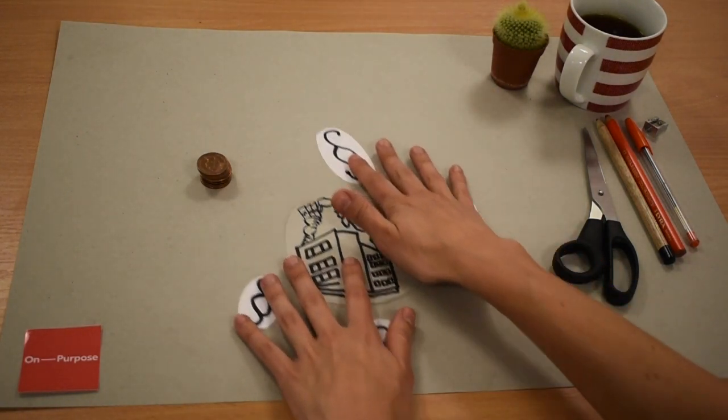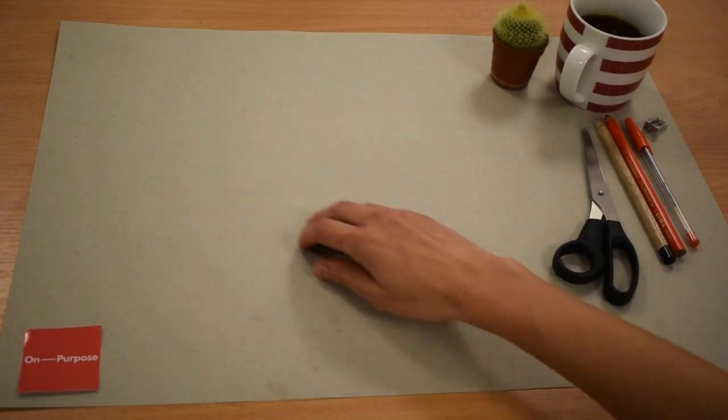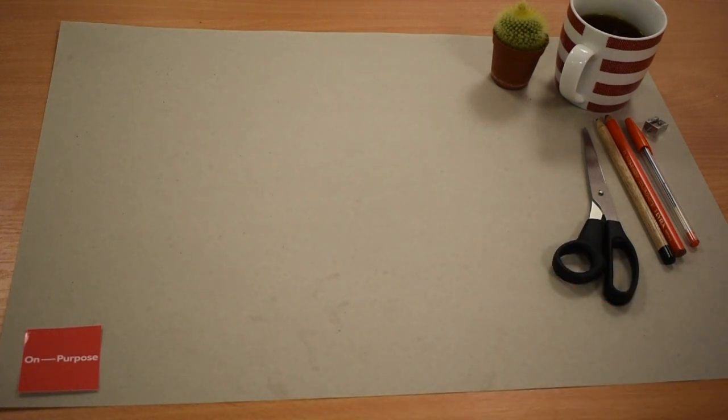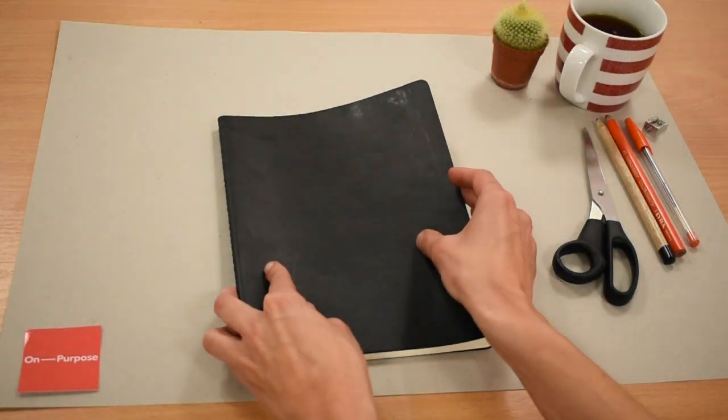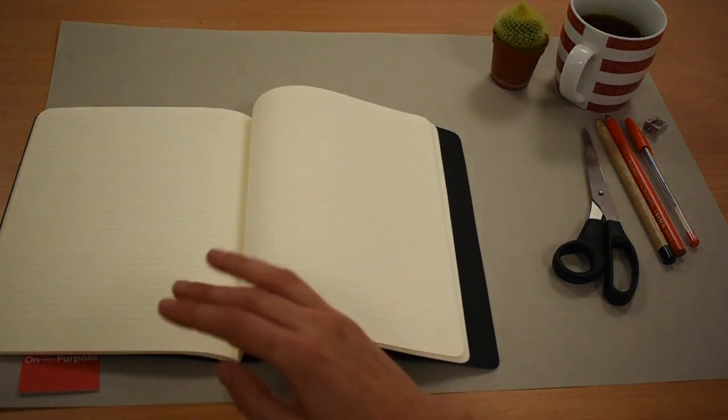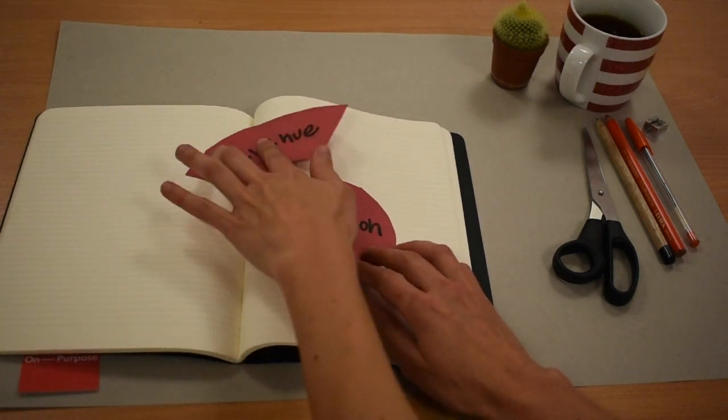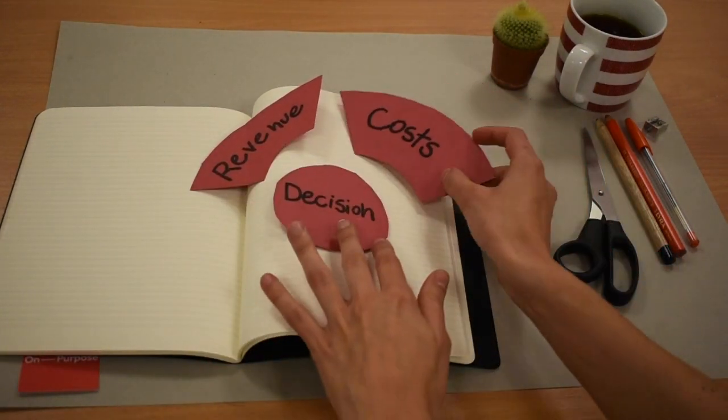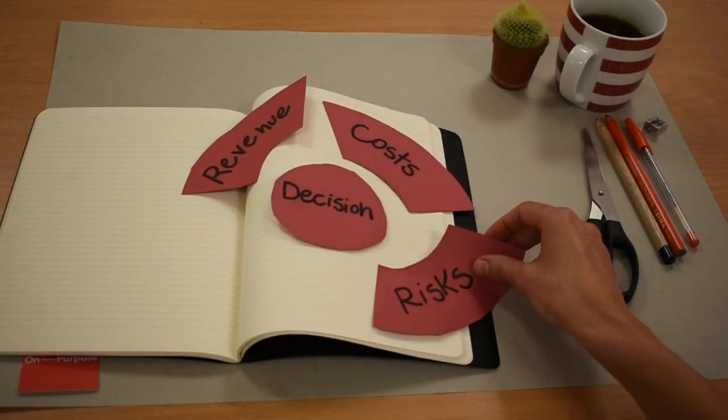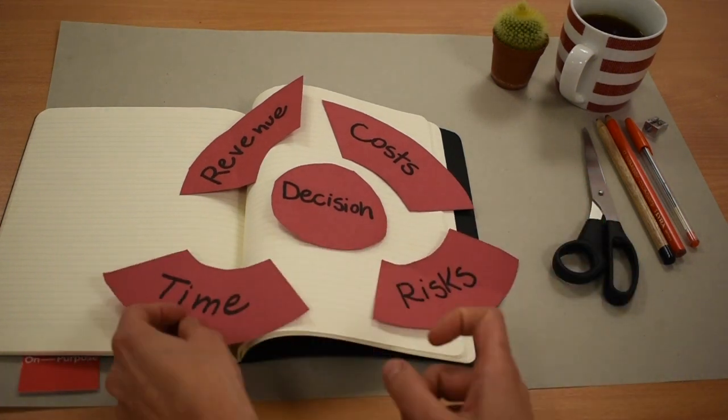To make sure that all organisations manage themselves with enough self-interest at all times, we invented a simple but powerful decision-making tool – the business case. For every decision, the business case lays out how much money the organisation will make, how much it will cost, the risks involved and how long it will take.